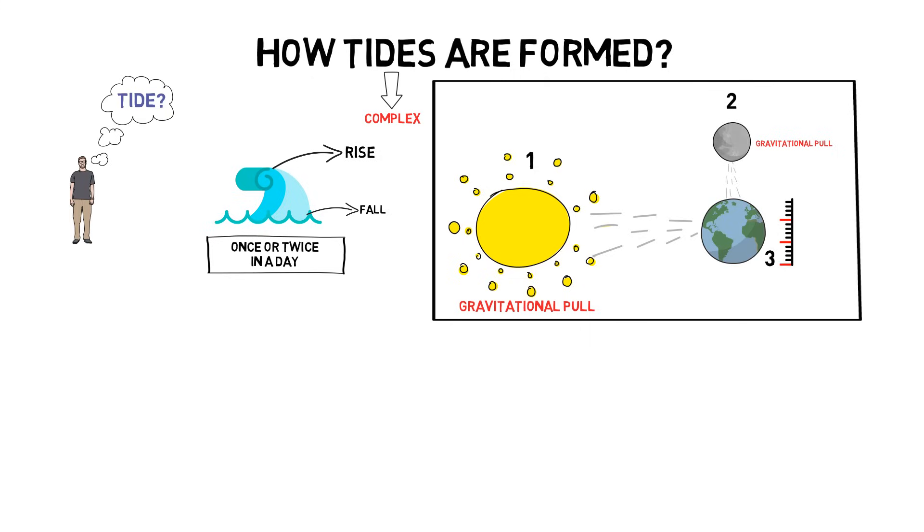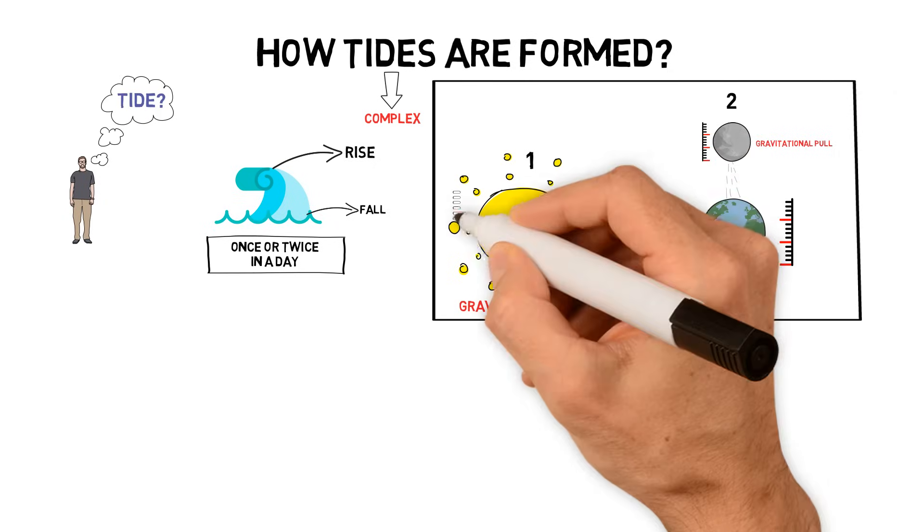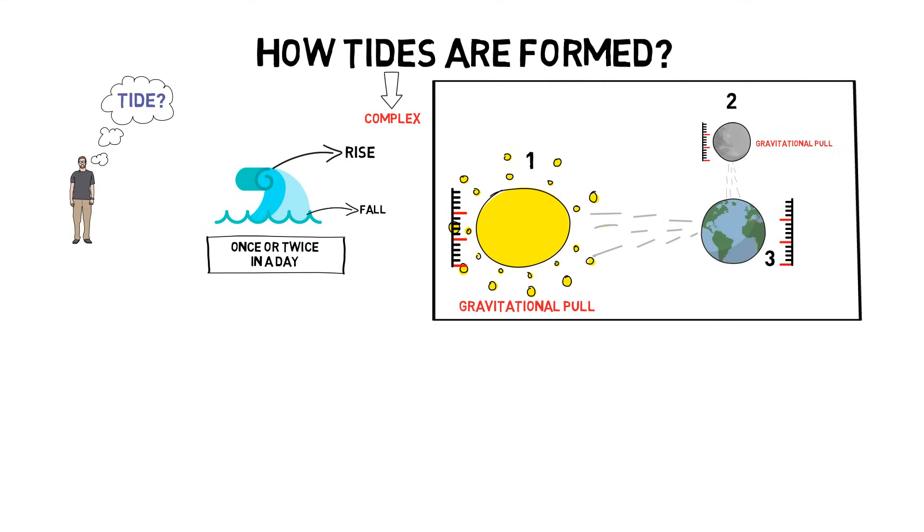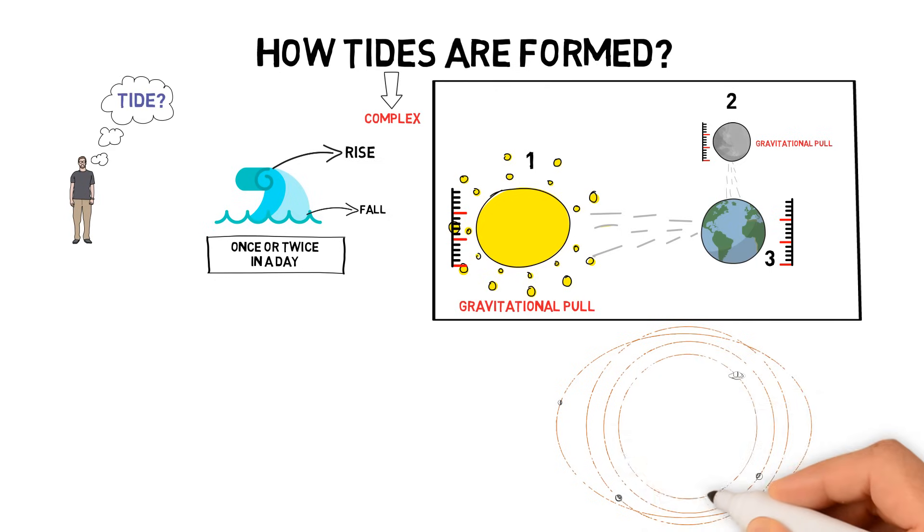As we know that the earth is quite larger than the moon, that's why the moon orbits around the earth. But then if you see, the earth is smaller than the sun. The sun is enormous. That's why the entire solar system revolves around the sun.